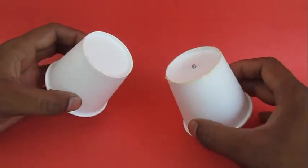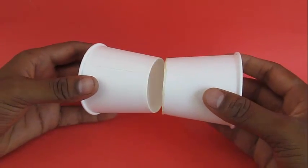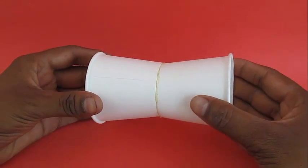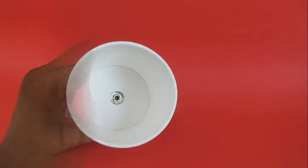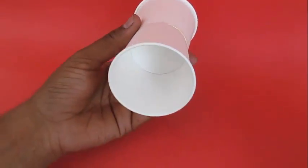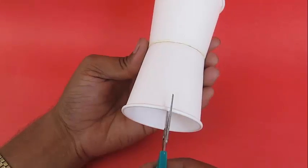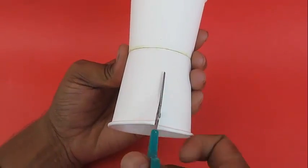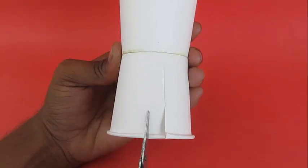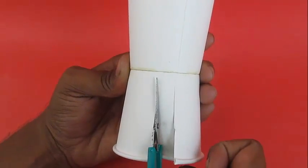The paper cup which doesn't have the button will become the propeller. After sticking, cut the paper cup without the press button into 10 to 15 petals by making 10 to 15 cuts on the side of the cup.